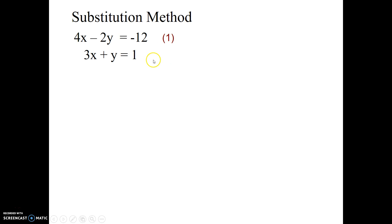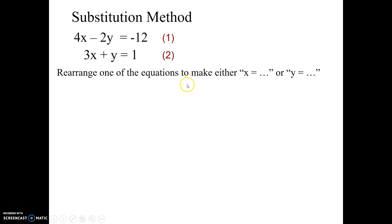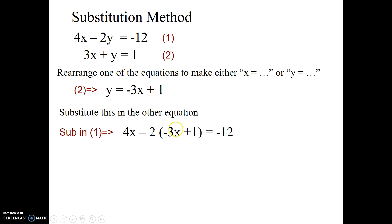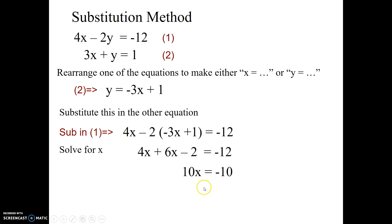The substitution method: with a similar pair of equations, we take the two equations and rearrange one of them to make it say x equals or y equals. In this example let's rearrange equation two to get y equals 1 minus 3x, or negative 3x plus 1. Then substitute this expression into equation one — wherever you see y in equation one, write negative 3x plus 1 in brackets. Now you have one equation with only x's, so you can solve it. Multiplying out the brackets gives 10x.